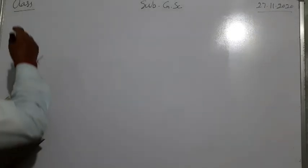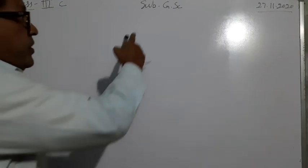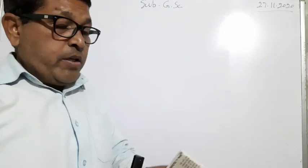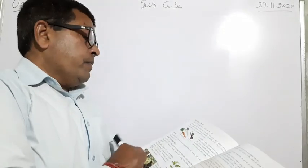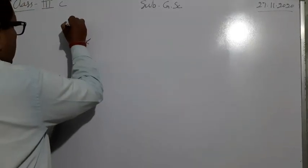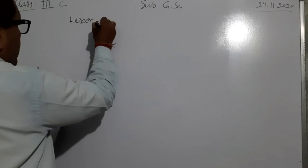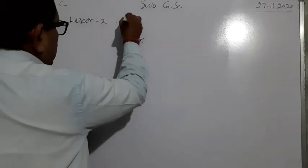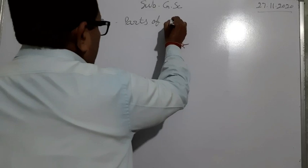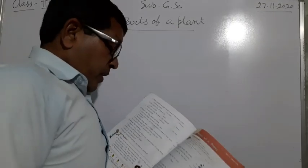Now class third C. Subject GSC, date is 27, 11, 20. So we are reading lesson two, parts of a plant. We are studying lesson two, parts of a plant.